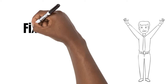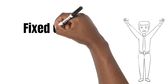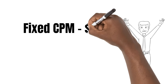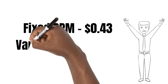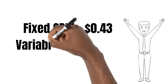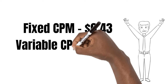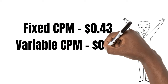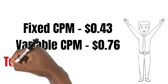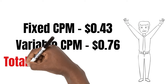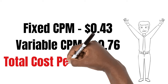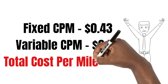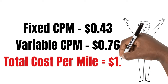So now we're going to take our fixed cost per mile and our variable cost per mile, and we're going to add those two together to give us our total cost per mile of a dollar and 19 cents. And there you have it, guys.